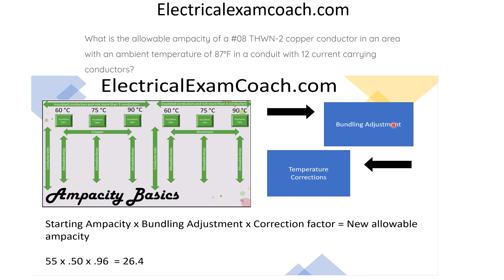Then we head over to our temperature correction factor table and find the correction factor for an ambient temperature of 87 degrees Fahrenheit. When we have both factors, we start with our original ampacity of 55 amps, multiply it by 0.50 — our bundling adjustment — and multiply by 0.96 — our correction factor — and that gives us a new allowable ampacity of 26.4 amps. I am the Electrical Code Coach, and you can head over to ElectricalExamCoach.com to learn about this topic and many more.